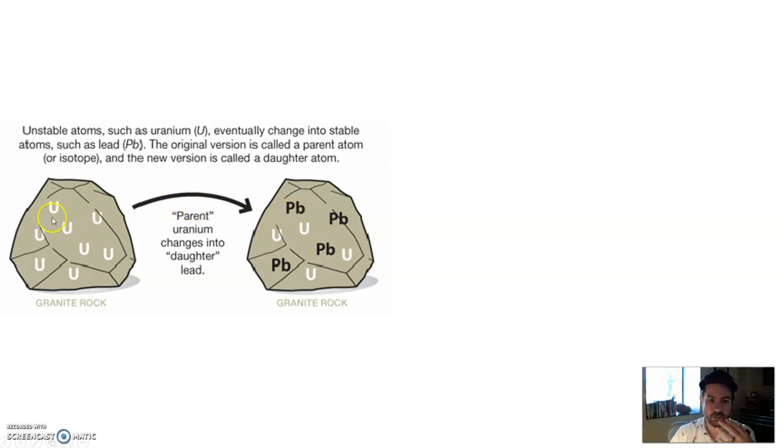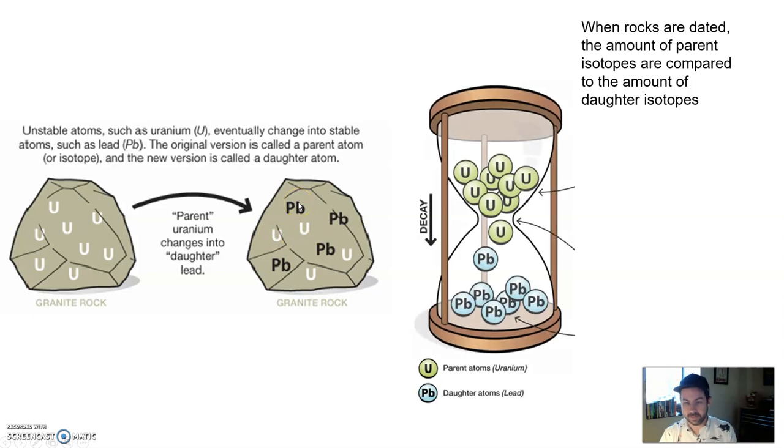We have the original parent atom, or the isotope, changing, evolving into its daughter product, daughter atom, in this case, lead. If we can figure out how long it takes uranium to do that, count how much uranium is in a particular sample, or should be in a particular sample, but then see how much uranium has actually decayed to lead over time, then we can figure out a pretty precise age.